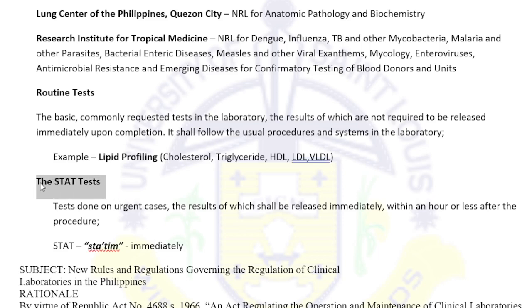Another type is the STAT test — urgent tests that must be done immediately regardless of how many samples you have. STAT tests usually come from the ER for emergency cases. The most common STAT test in the lab is the troponin test, because troponin assesses for cardiac arrest. Even if you have 1,000 samples on your table, if a troponin test arrives labeled STAT, it must be processed first — it is not first-come, first-served.